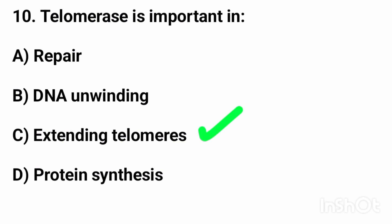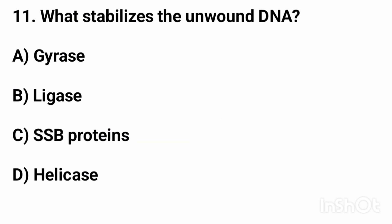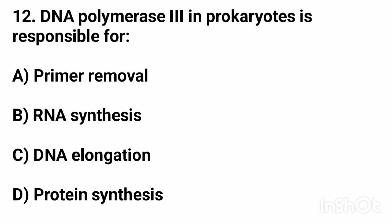Question number ten: telomerase is important in? The right answer is option C, extending telomeres. Question number eleven: what stabilizes the unwound DNA? The right answer is option C, SSB proteins.